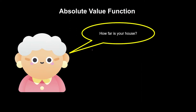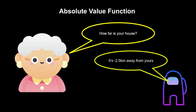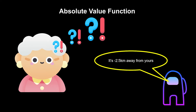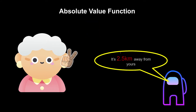Absolute value functions, or sometimes we call them modulus functions. Imagine a scenario where grandma asks you how far your house is. If your answer is 'it's negative 2.5 km away from yours,' grandma will be confused because of the negative sign. In real life, it's very rare to use negative numbers for distance. It's better to just say your house is 2.5 km away. So how can we convert a negative number to become a positive number? This is why we're going to learn absolute value functions today.